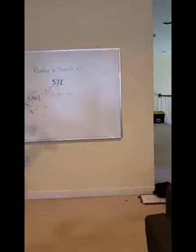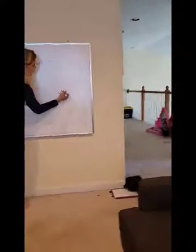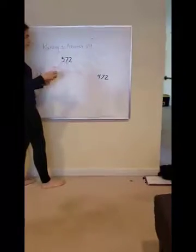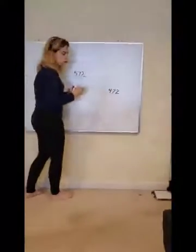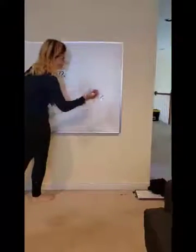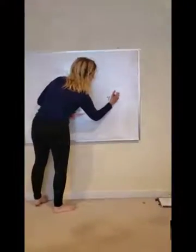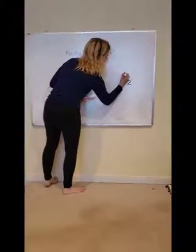Okay? Last one I'm going to do is going to be a really easy one. 472. Again, we're going to underline. We're going to label first. Sorry. We're going to label. So, we've got ones, tens, hundreds.